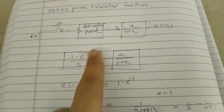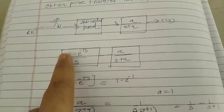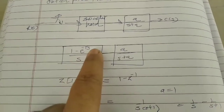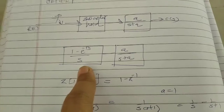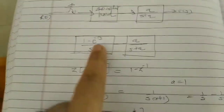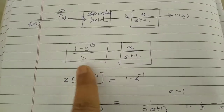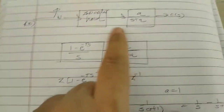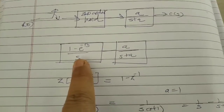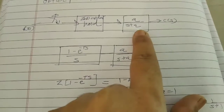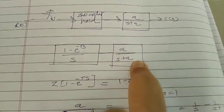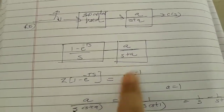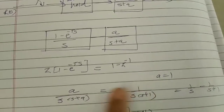For a zero-order hold system, the transfer function is (1 minus e raised to minus Ts) divided by s. We are not going into detail of how this function is derived right now. There is also another gain function in this system: a divided by (s plus a), where a is given as 1.